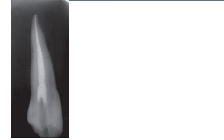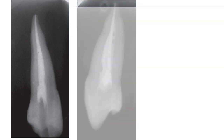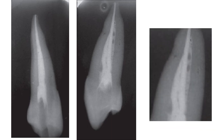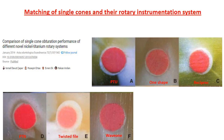In another case, two gutta-percha cones were placed, but we can still see void spaces of sealer. Another study examined cones made for specific rotary systems — ProTaper Universal, One Shape, Reciproc, ProTaper Next, Twisted File, and WaveOne — and there is still a lot of sealer around the single cone. The gutta-percha cone fills the majority of the canal volume, but sealer still occupies a significant volume.